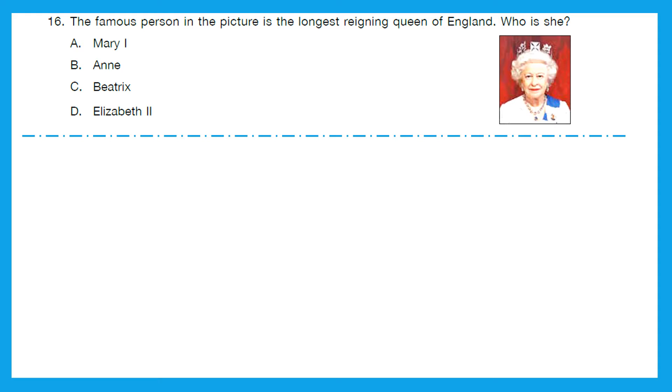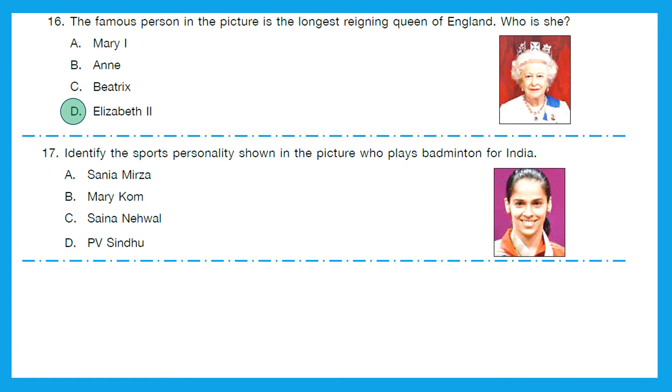Question 16: The famous person in the picture is the longest-running queen of England. Who is she? Can you recognize her? She is Elizabeth II. Option D is the right answer. Question 17: Identify the sports personality shown in the picture who plays badminton for India. And she is Saina Nehwal. Option C is the right answer.